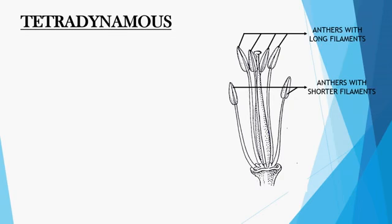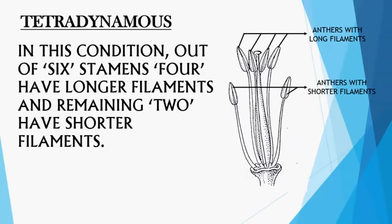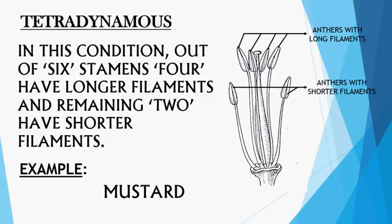The second type is tetradynamous. In this condition, out of six stamens, four have longer filaments and the remaining two have shorter filaments. In the photograph, the flower has six stamens — four with long filaments and two with shorter filaments. This condition is called tetradynamous. Example: mustard.